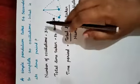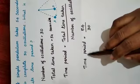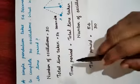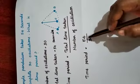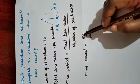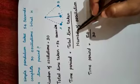Let us substitute the values. Time period is equal to total time taken 54 divided by number of oscillations 30.